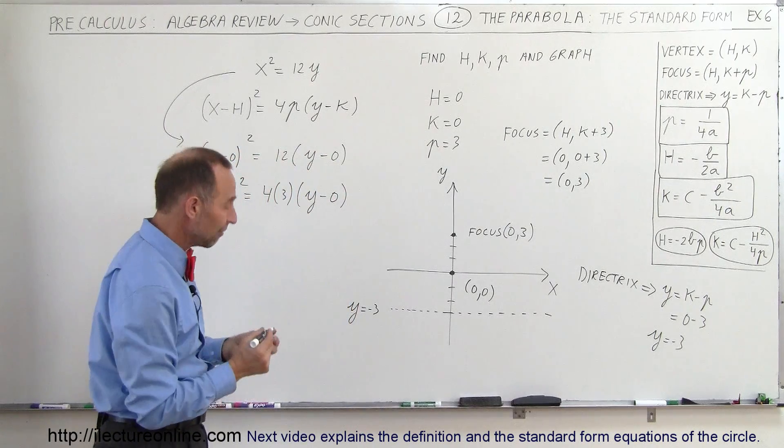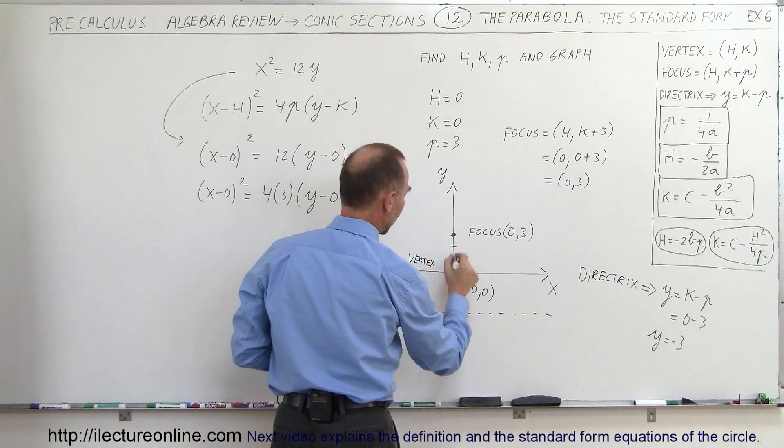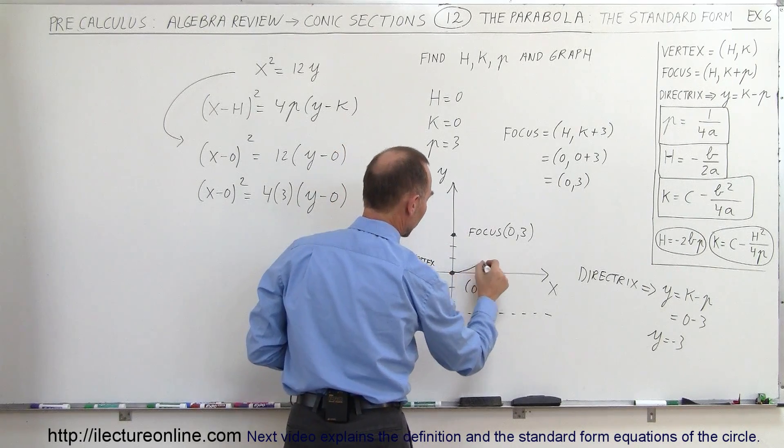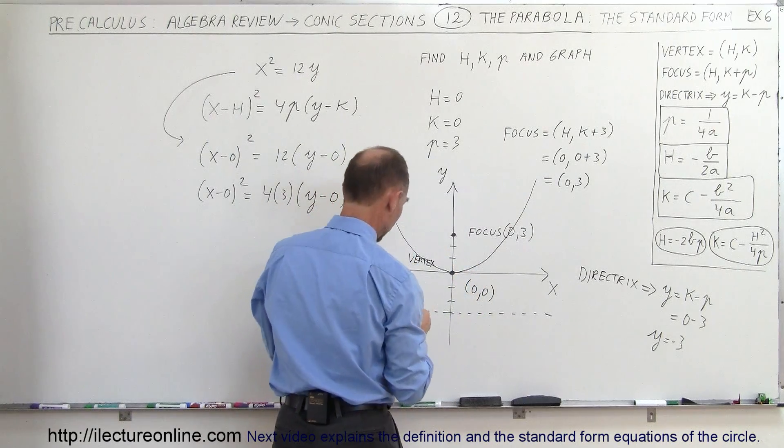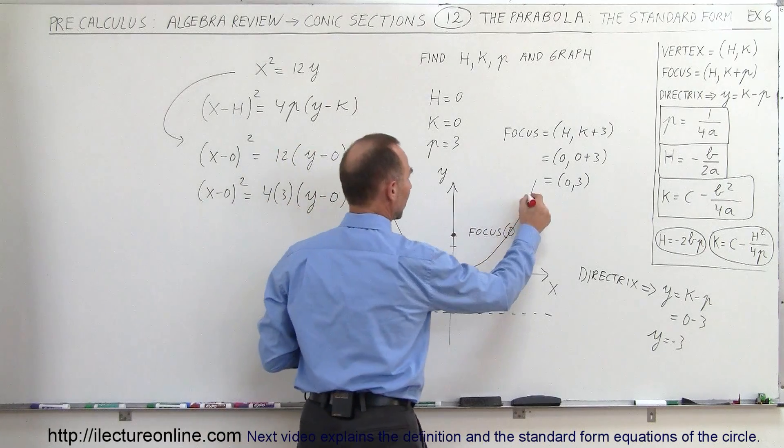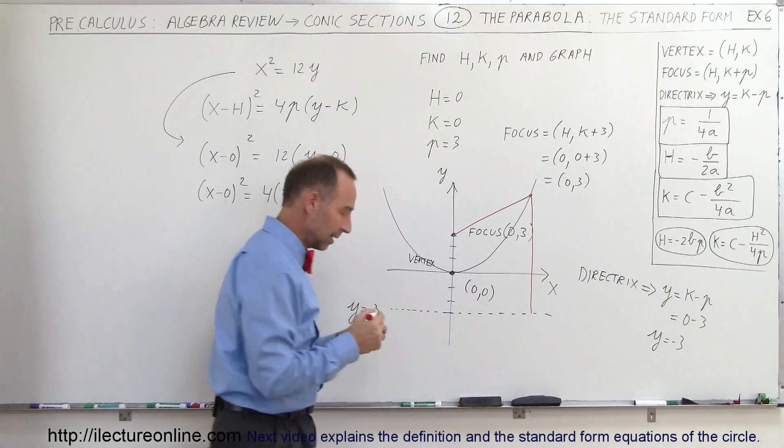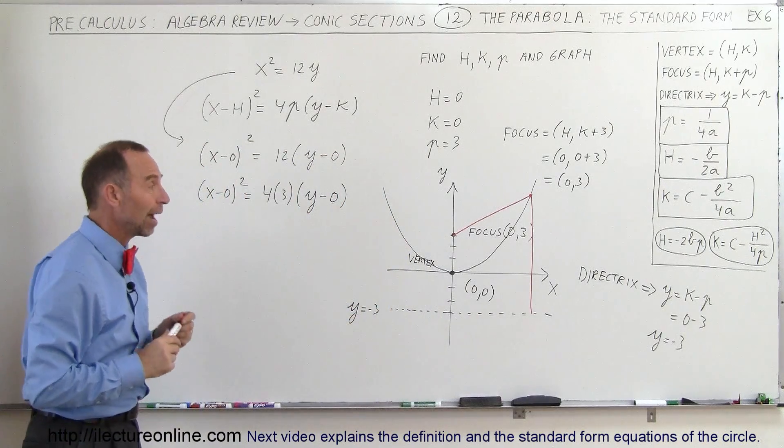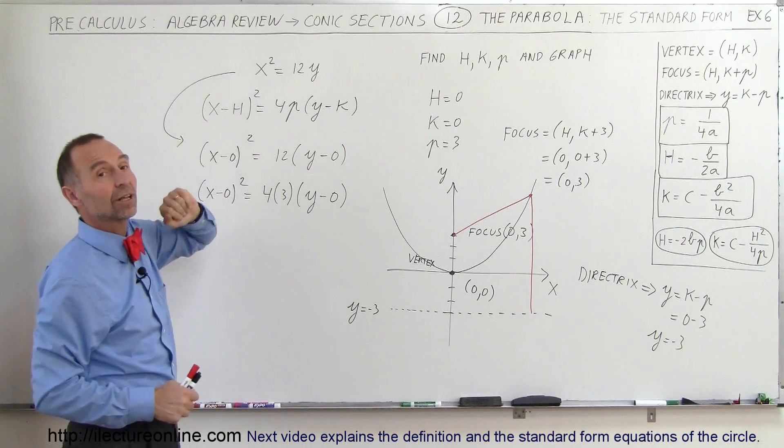Now I can go ahead and graph it. If this is my vertex right here at this location, that's my focus, then I know that the parabola must open upward like this and like this in such a way that the distance from the focus to any point on the parabola, this one right here, should be equal to this distance right there.